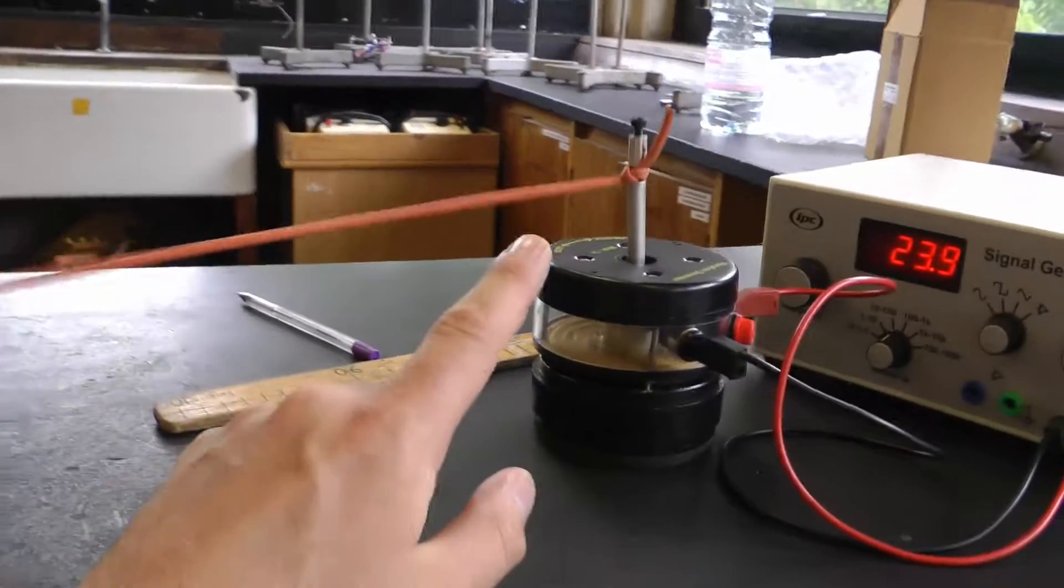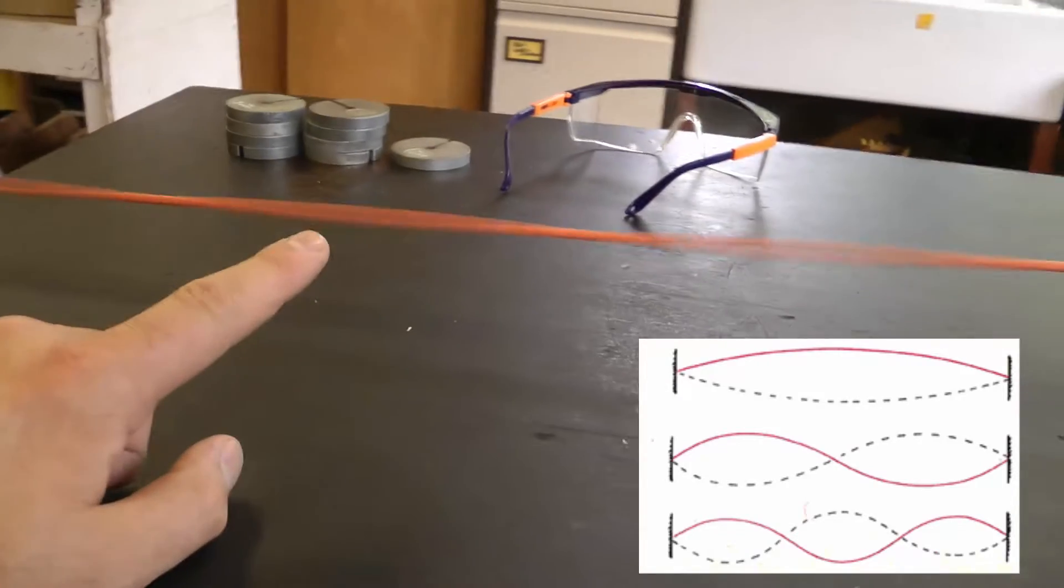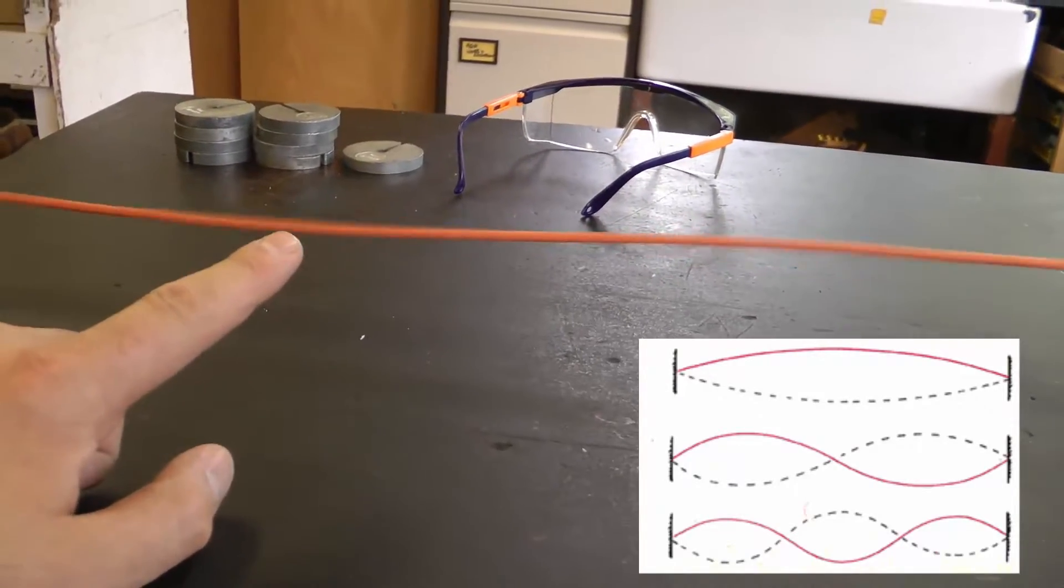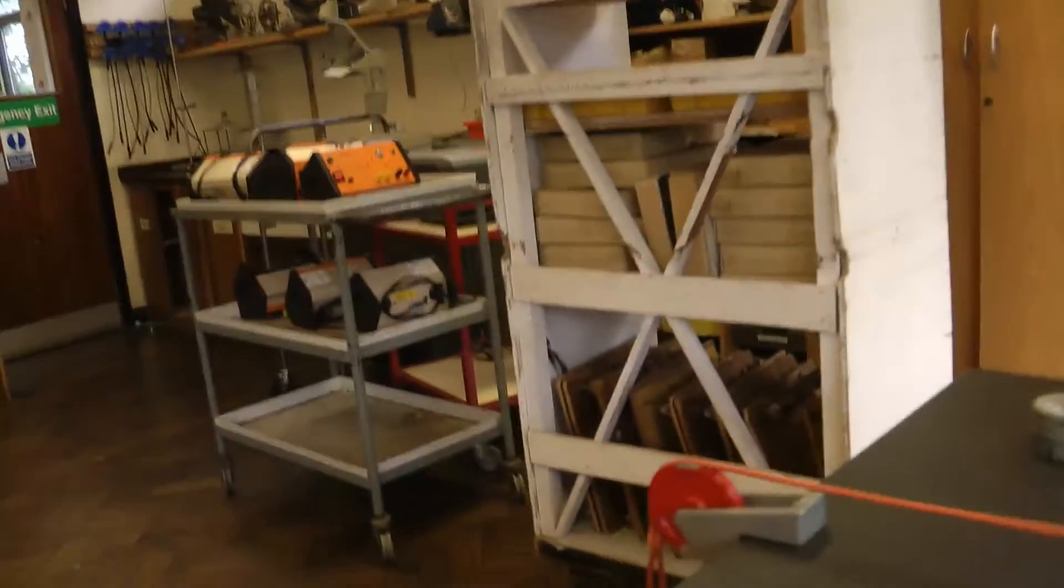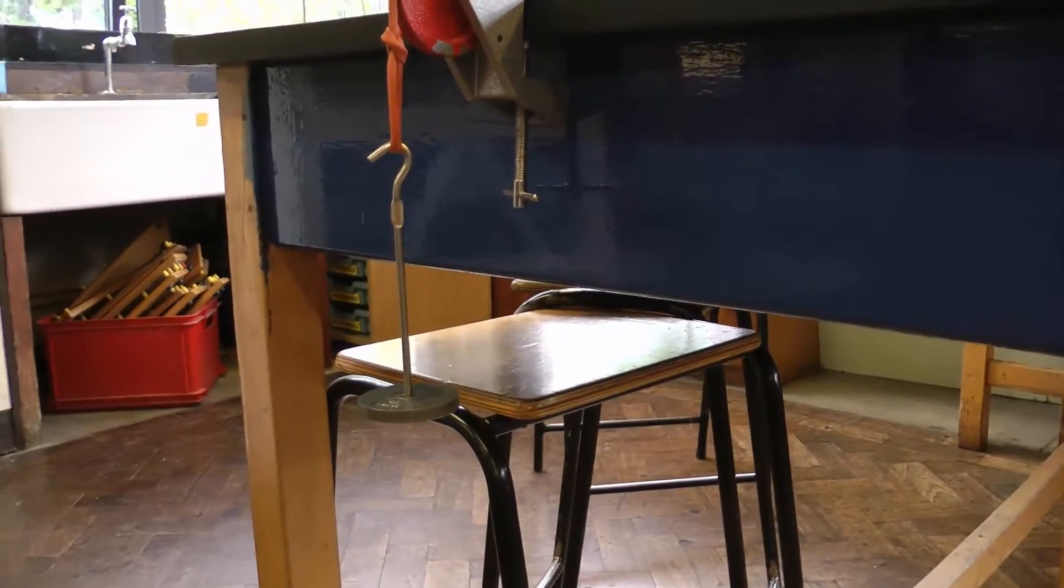We've set up on this elasticated cord some standing waves. You can see a part here that's an anti-node, this part is a node, anti-node. You can count the number of waves that are fitting on the entire string. We can also change the tension in the string by adding masses to the hanger.